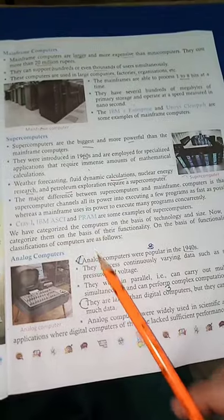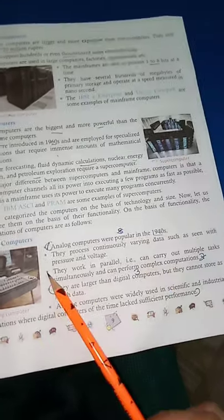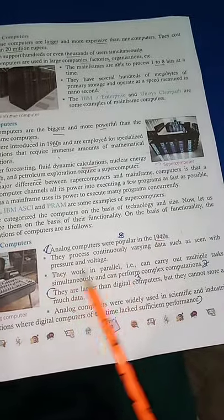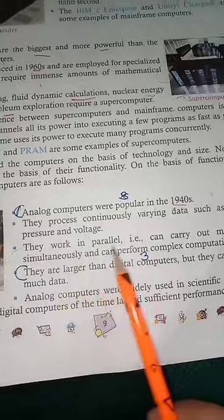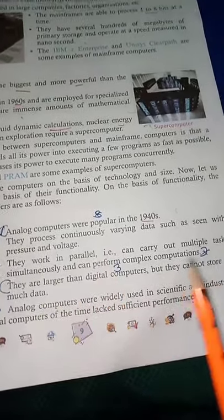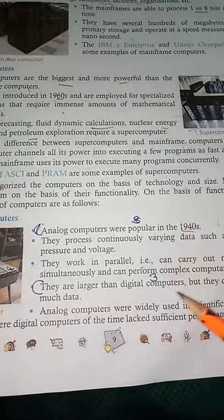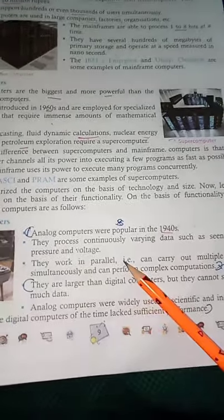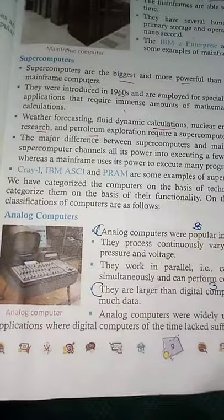जो analog computer हैं वो 1940 में आए। इनकी process continuous चलती रहती थी और यह parallel series में काम करते थे। Multiple tasks perform करते थे, पर यह digital computer के according size में बड़े रहते थे और इतना ज्यादा data store नहीं कर सकते थे।